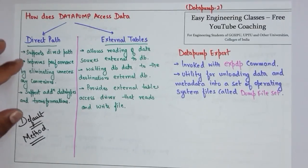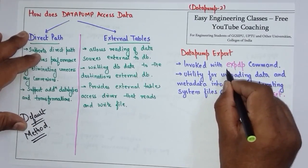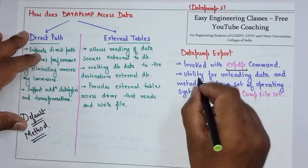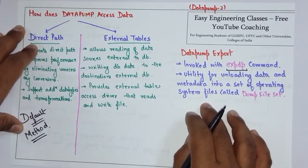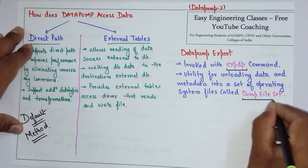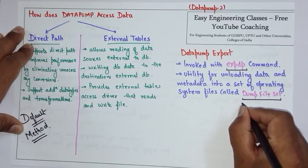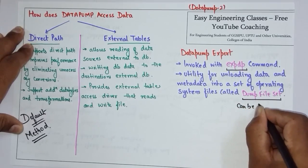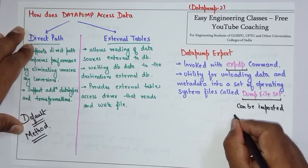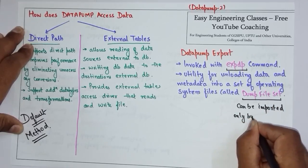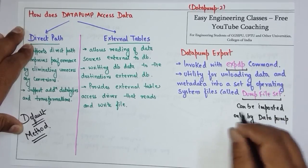Next is about Data Pump Export. Data Pump Export is invoked with the expdp command. It is a utility for unloading data and metadata into a set of operating system files called a dump file set. This dump file set can be imported only by the Data Pump Import utility.